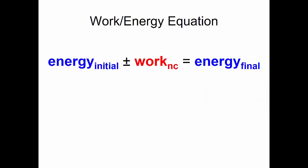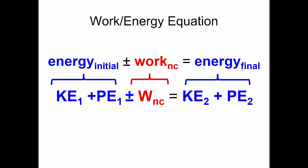We have an initial amount of energy. We add or subtract non-conservative work to the system, and we end up with final energy. Our initial energy consists of kinetic energy and potential energy. We add or subtract non-conservative work, and then we have our final kinetic energy and final potential energy.